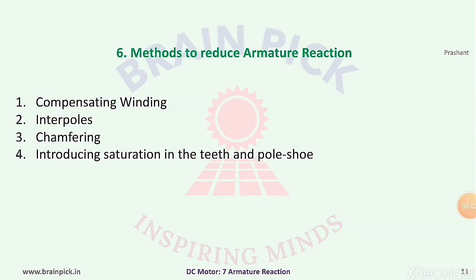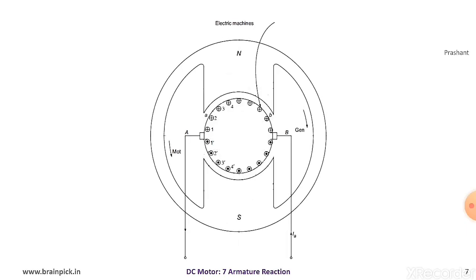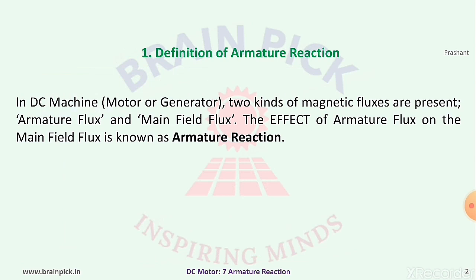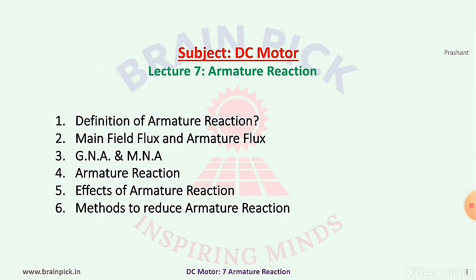Methods to reduce armature reaction: armature reaction can be reduced by number one, using compensating winding; number two, using interpoles; number three, chamfering; and number four, introducing saturation in the teeth and pole shoe. This is the end of lecture number seven on armature reaction. The armature reaction in a DC motor or DC generator is the same — the only difference is the shifting of MNA.